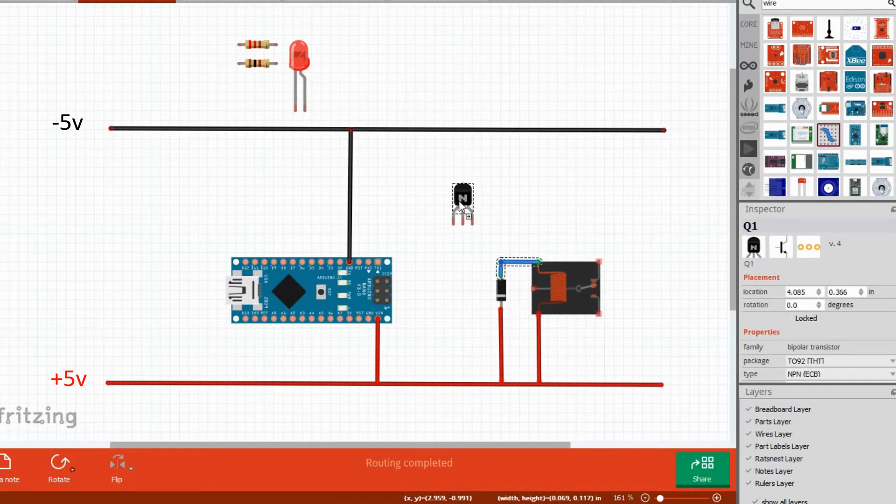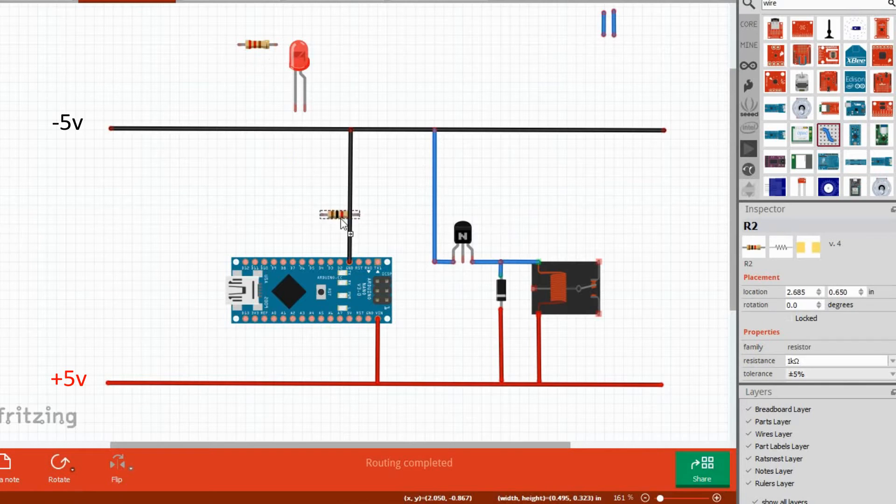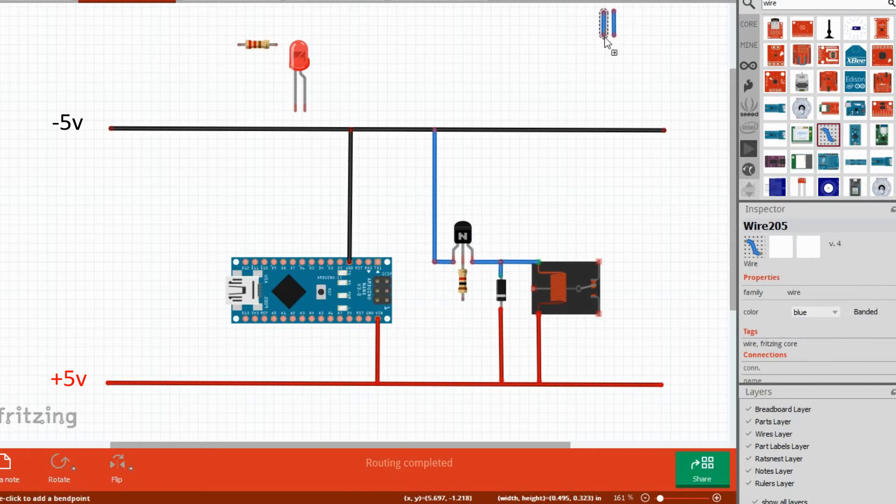Then connect the collector of the NPN transistor to the second pin of the coil. The emitter connects to the negative rail of the breadboard. Finally, using a 1K resistor, connect the base of the transistor to the D2 pin of the Arduino. That's it, our circuit is complete.